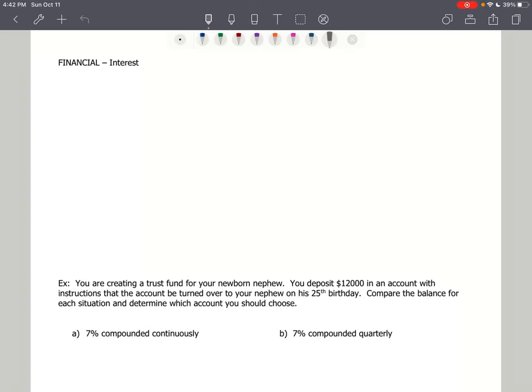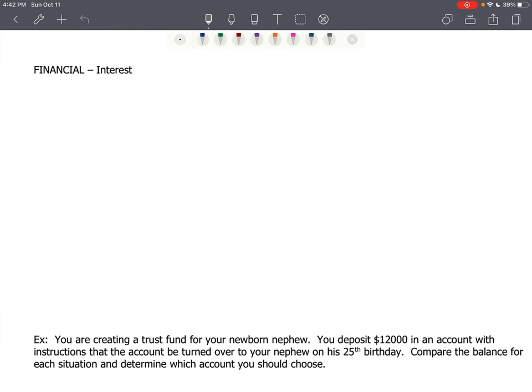There are two formulas we need to know for our financial interest problems. One of them is A equals P times the quantity 1 plus R over N raised to the Nt power. This is the formula when we are compounding money, compounding interest, N times per year.